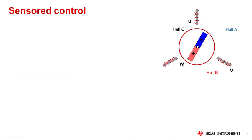Now, it makes sense to talk about sensored and sensorless control at a high level and how it applies to each of the different commutation methods. We'll begin first with sensored control.